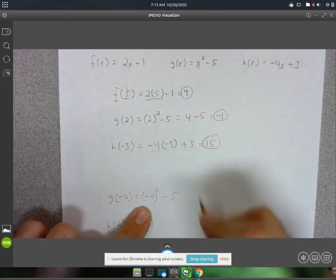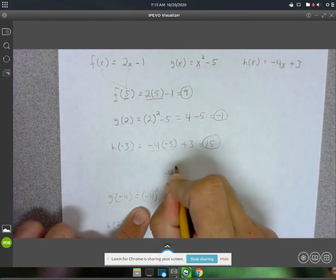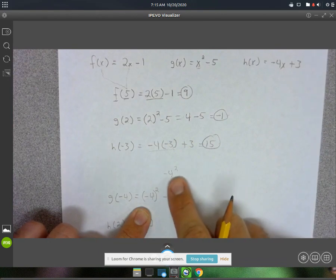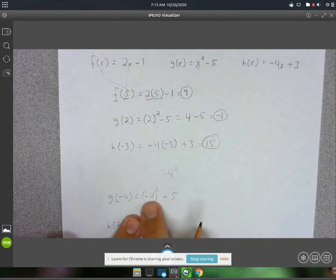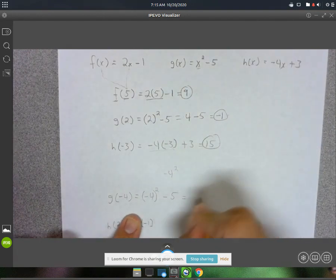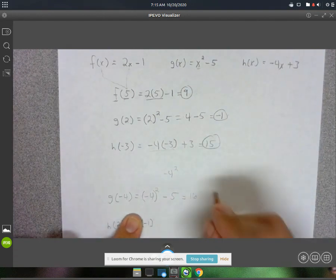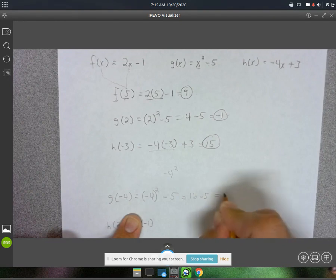See, if you had done negative 4 squared like that, this would be negative 16. But if you do it like this, the right way, it's actually positive 16. Alright, so you get 16 minus 5 equals 11.